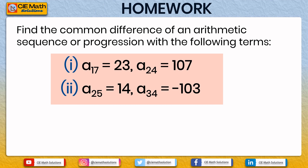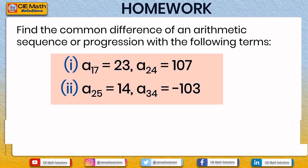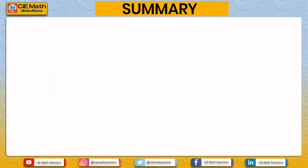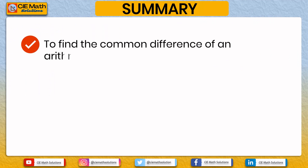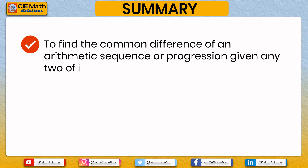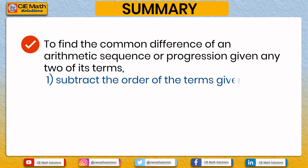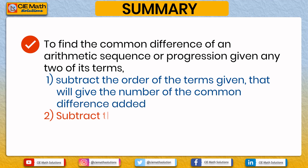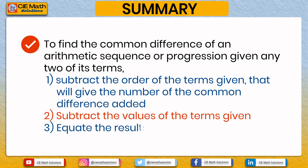To summarize what we have learned today — to find the common difference of an arithmetic sequence given any two of its terms: first, subtract the orders of the terms given, which gives the number of common differences added; second, subtract the values of the terms given; third, equate the results and find the value of d.